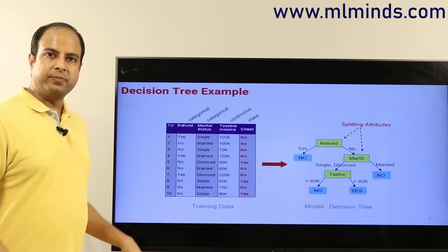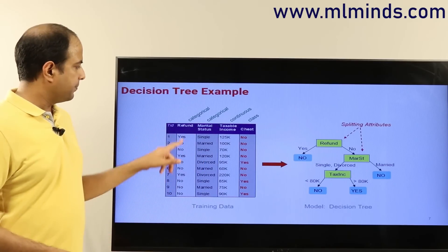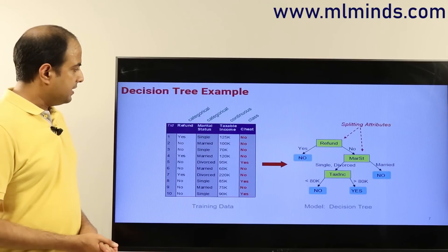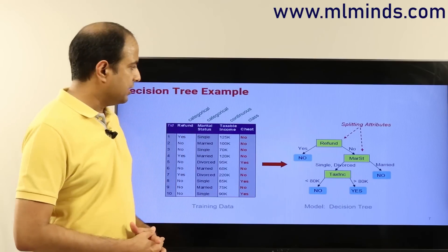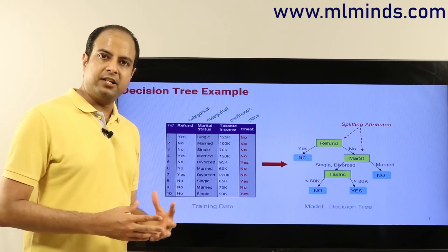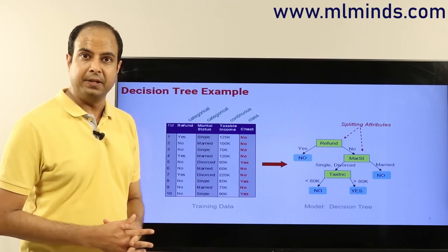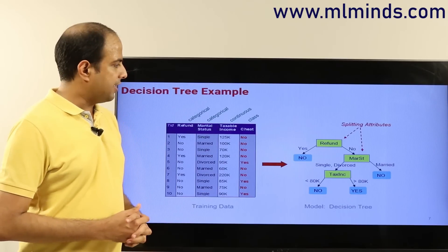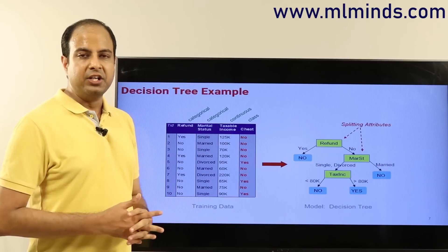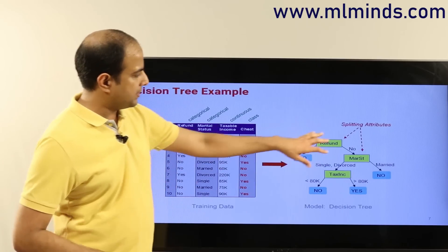For example, consider data from an income tax department: ten people with four features — whether a refund was due when they filed a return, marital status, taxable income, and whether the person cheated while filing. A 20-years-experienced income tax officer would have a mental structure to figure out if someone cheated. In India, about 40 to 50 million people file income tax returns every year, and the department needs to identify which people in an audit sample have a high probability of cheating.